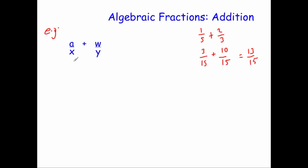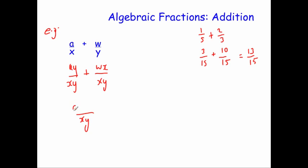So here we're going to times both the top and the bottom of the a over x by y, giving us ay over xy. Then we're going to times both the top and bottom of w over y by x, giving us wx over xy — putting them in alphabetical order. Now they've got the same denominator, so we can just add them together. The denominator is xy and the numerator is ay plus wx. So we've made them have the same denominator and added them together.